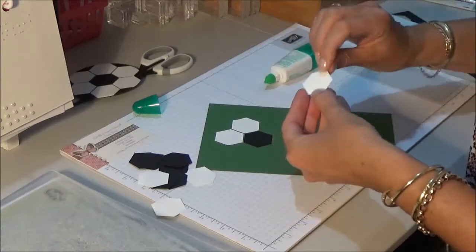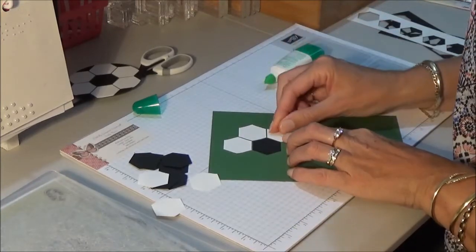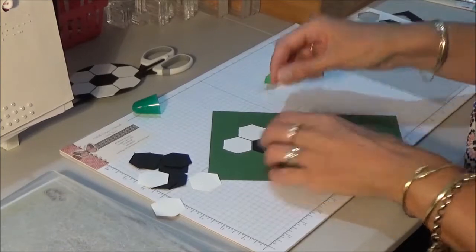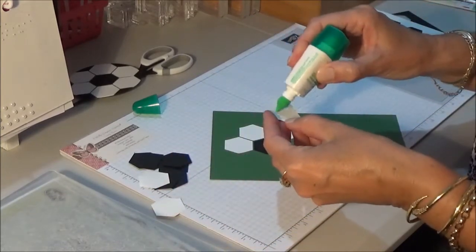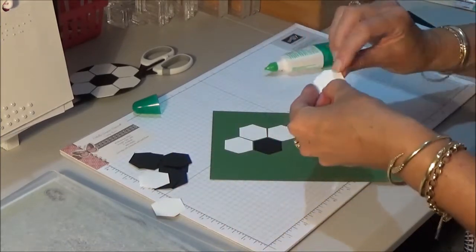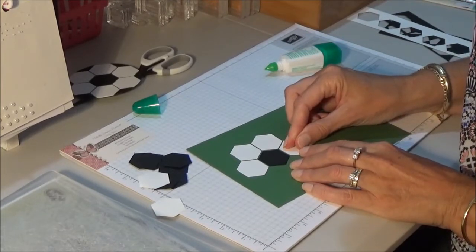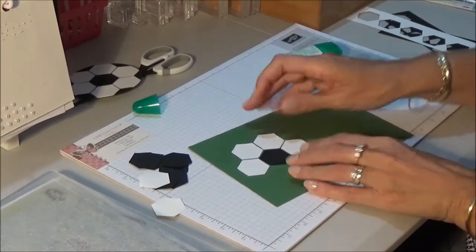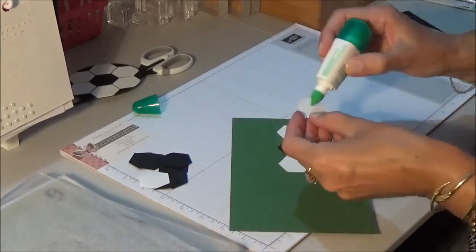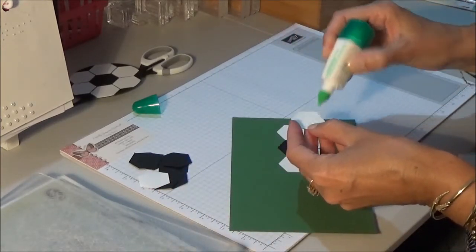Tombow glue is perfect for projects like this because it actually gives you about three seconds before it dries. So you've got that little bit of time to move it around and make sure that you get it just in the right position.